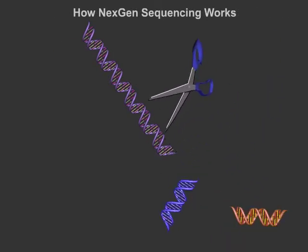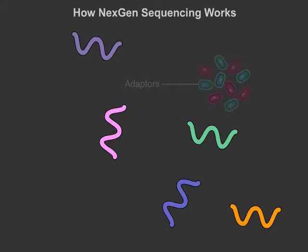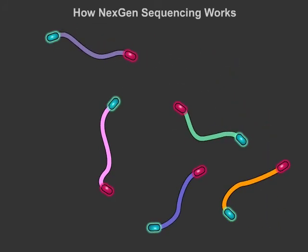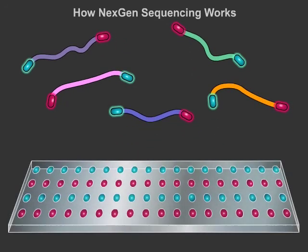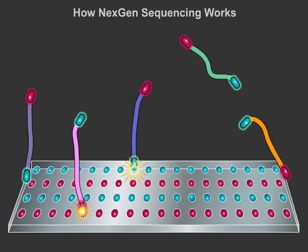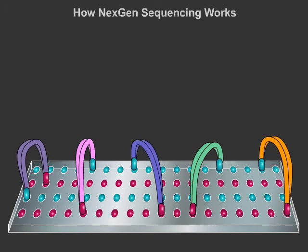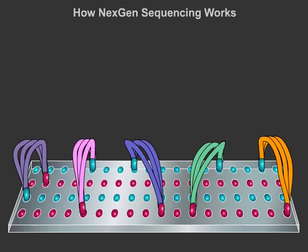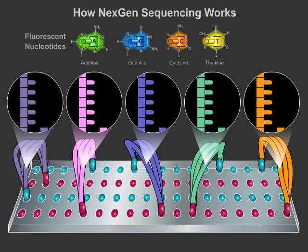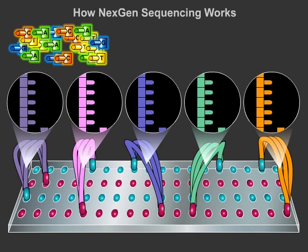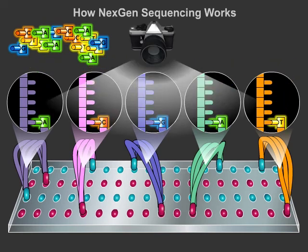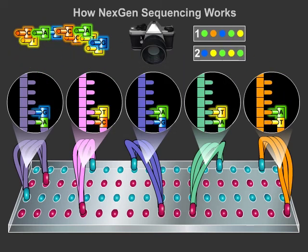Next-gen sequencing begins by shearing the DNA into many shorter pieces. Unique sequences of DNA called adapters attach to both ends of these fragments, acting as identifying barcodes for each piece of DNA. These adapters also allow both ends of each DNA fragment to attach to a slide through complementary base pairing. These bound DNA fragments are then amplified with DNA polymerase, making many copies of the DNA fragments in clusters. Fluorescently labeled nucleotides are added and allowed to bind to the DNA fragments. A camera reads the fluorescent label on each bound nucleotide to determine its sequence.